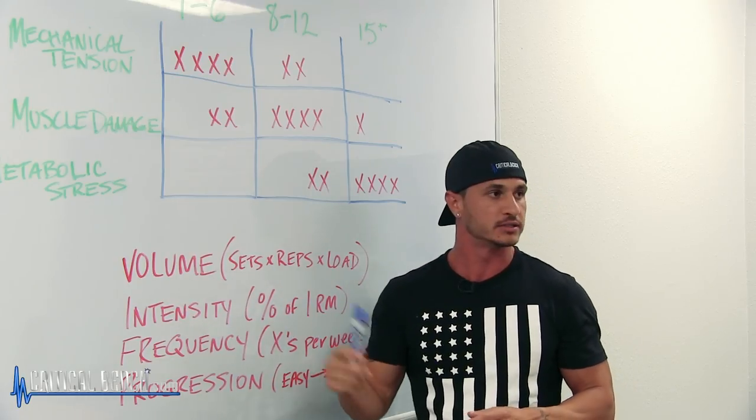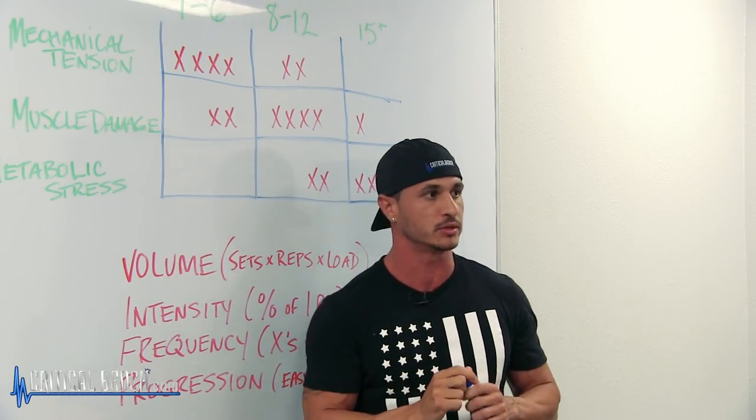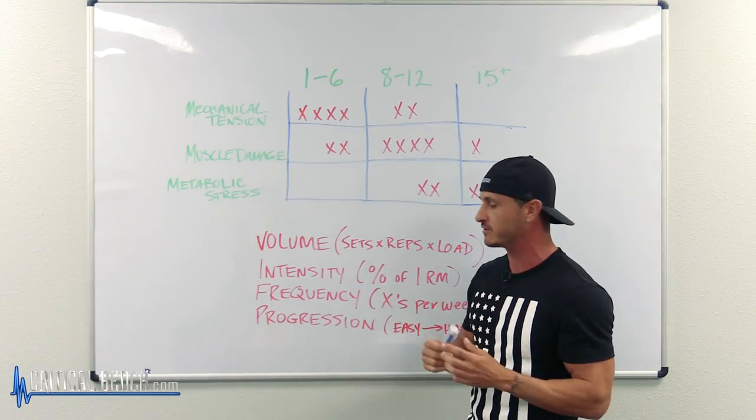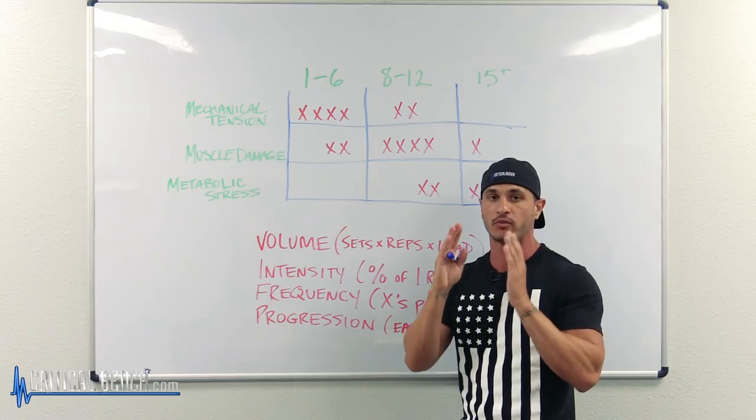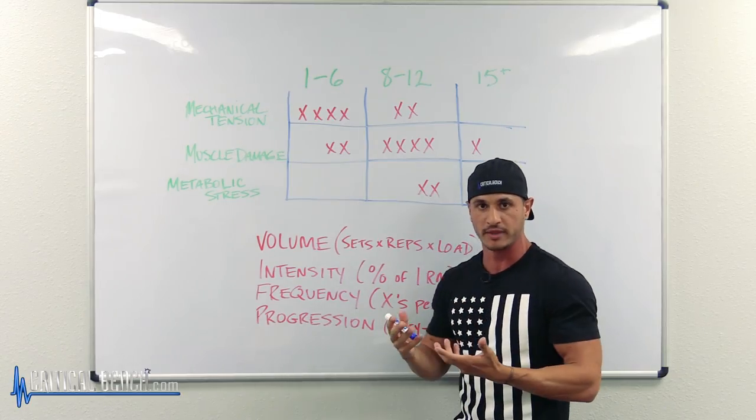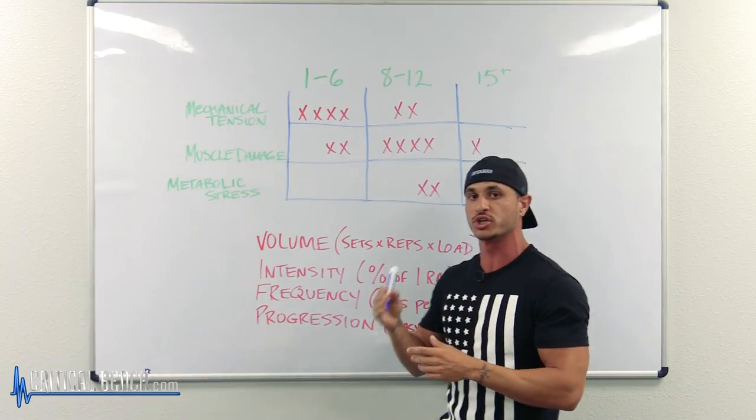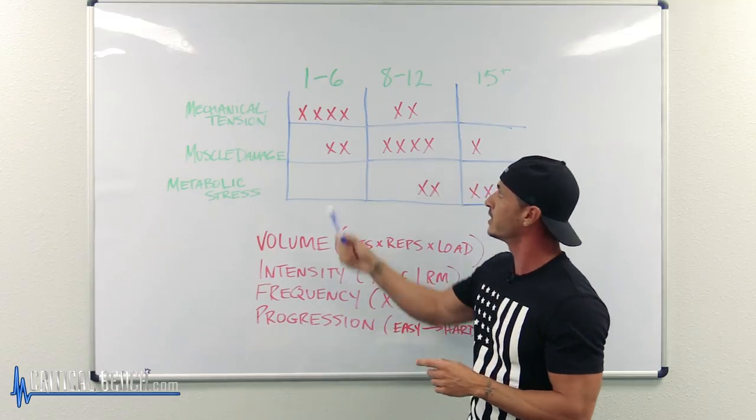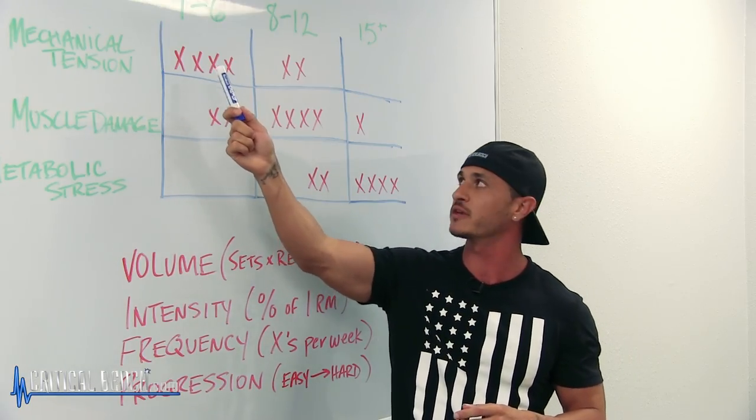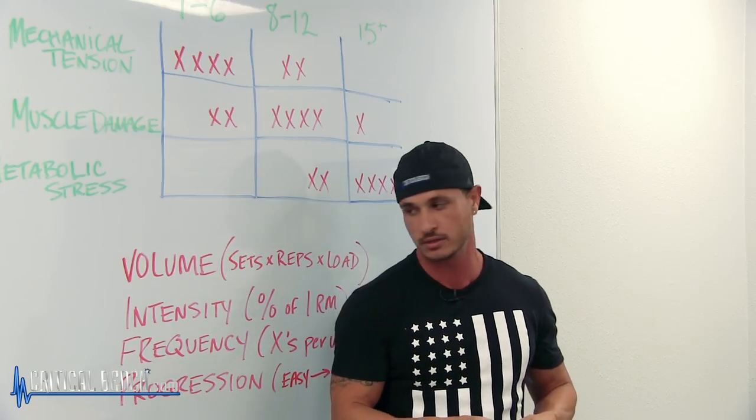A good rule of thumb is that we want to train at at least 60 to 65% of our one rep max if we want to maximize muscle growth. Now that brings me back to volume. If our main focus is to build muscle, most of our work, about 75%, should come in the 8 to 15 rep range or maybe 6 to 12. The rest of our work, that 25%, should come from strength training, because again we want to build strength so that we're stronger in our hypertrophy work.